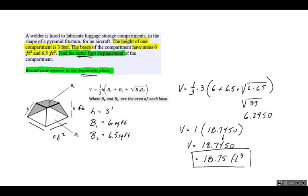Our final answer: the cubic foot displacement of the pyramid frustum built to these dimensions is 18.75 cubic feet. There you have it.